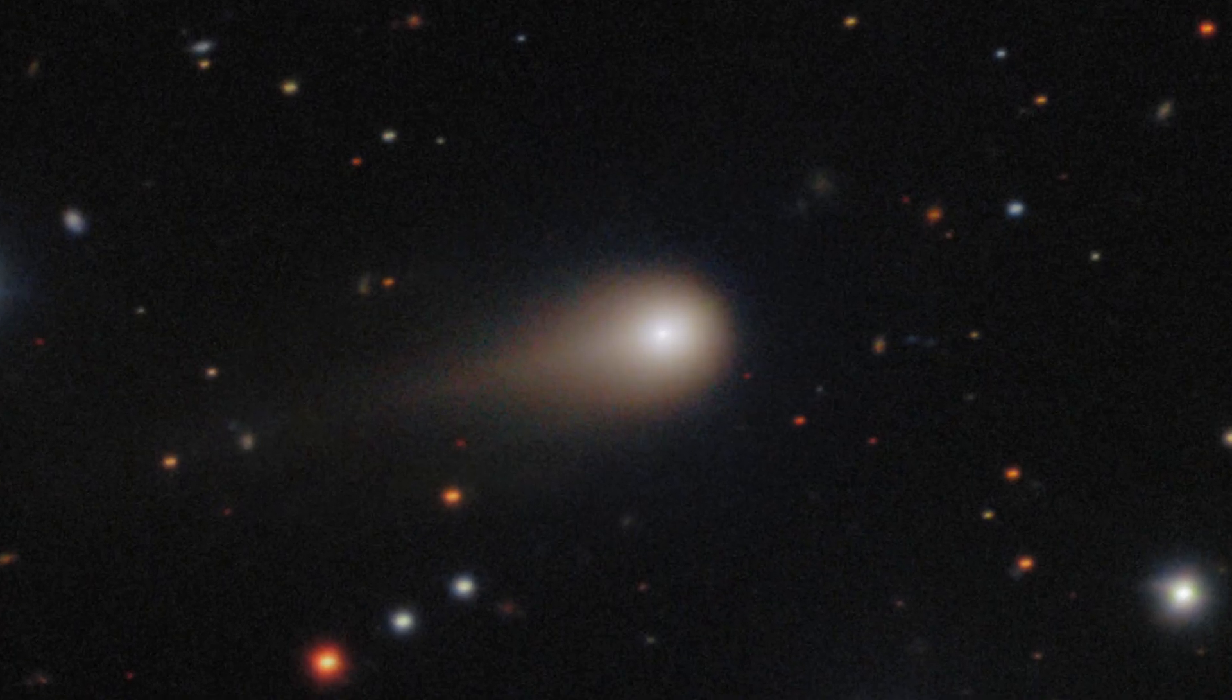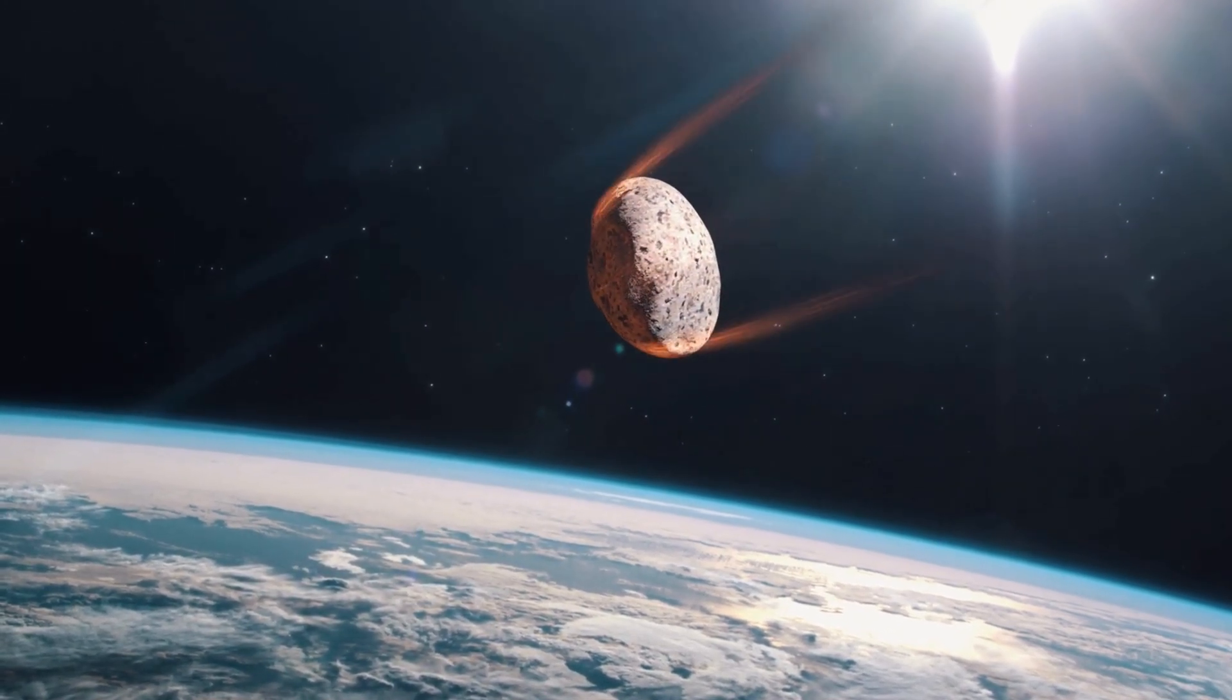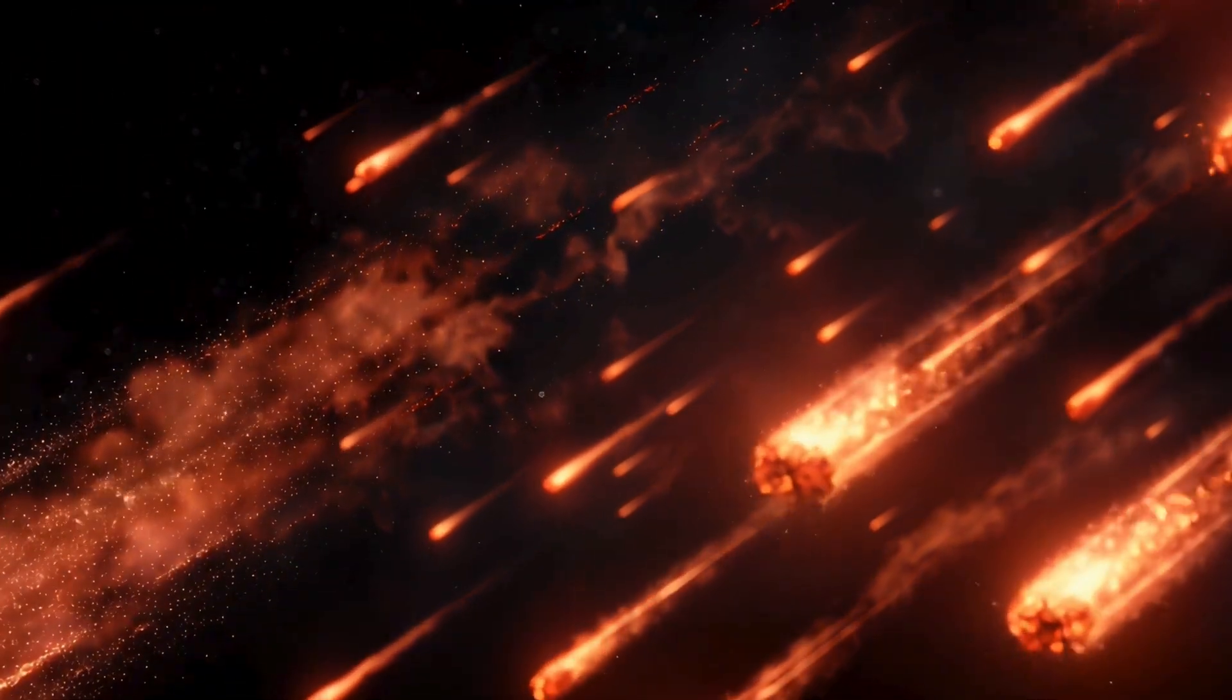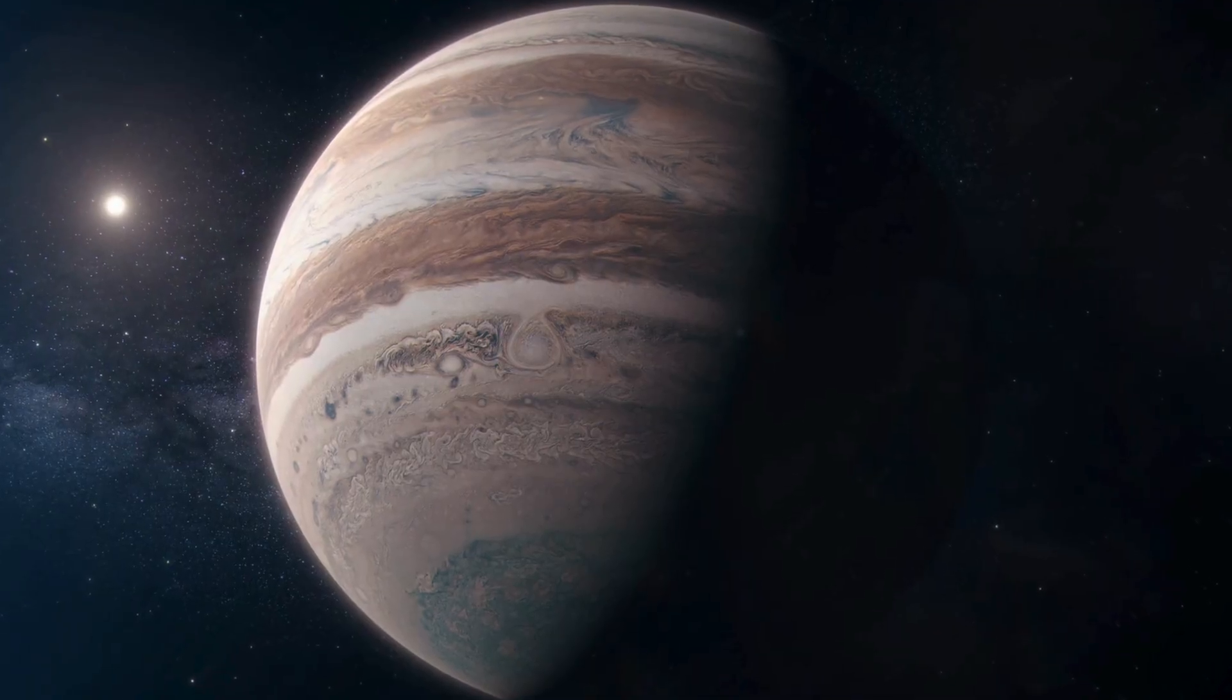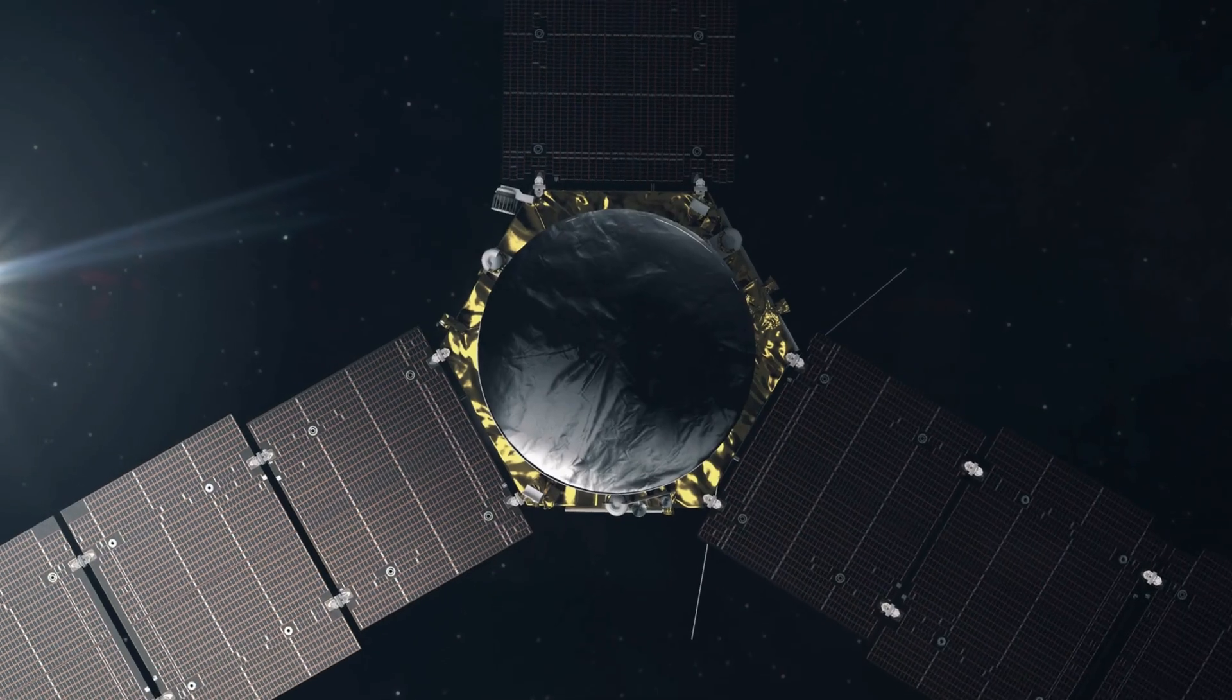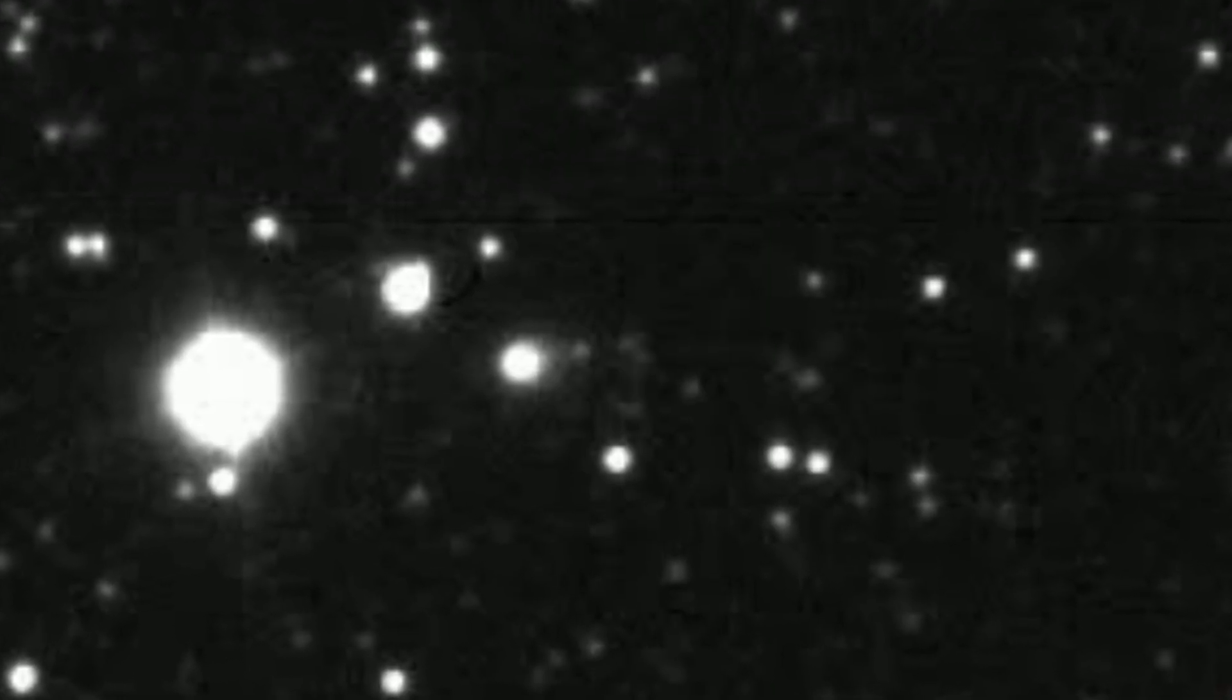As 3I-Atlas swings behind the sun, we'll lose sight until early December 2025, when it re-emerges at about one astronomical unit from Earth on December 19th, our closest view, though it'll be speeding away. One final encounter awaits on March 16th, 2026, when it passes 0.36 astronomical units from Jupiter. NASA's Juno probe, orbiting the gas giant, might snap a final image as 3I-Atlas cools and quiets down.